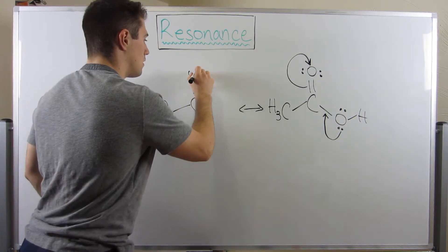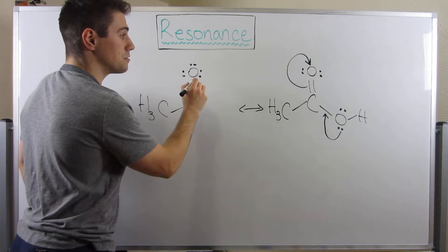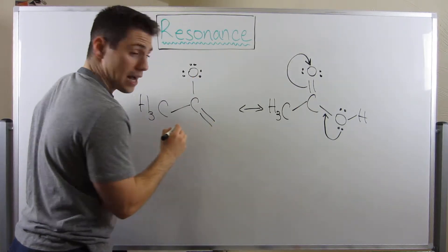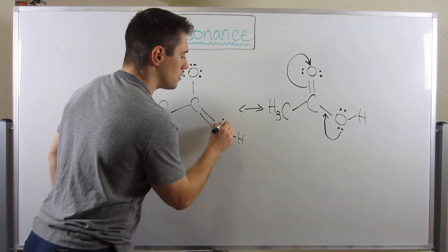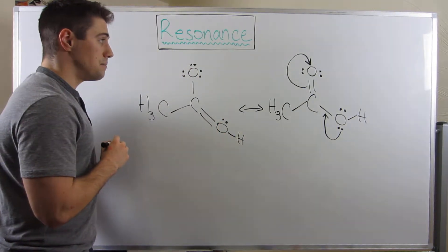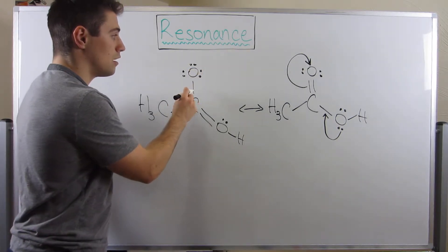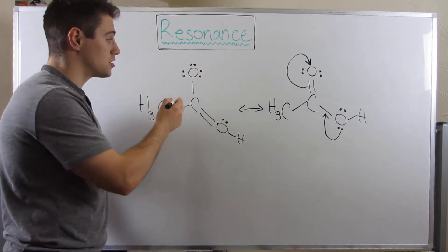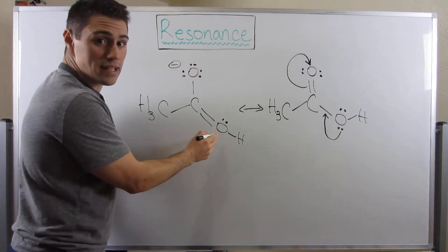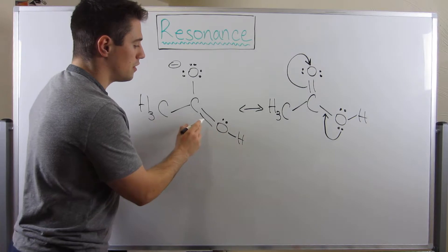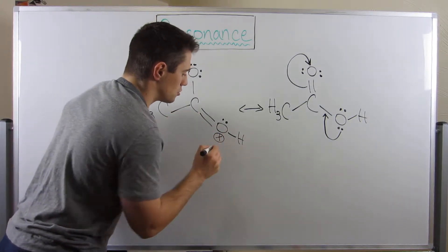So now this oxygen has three lone pairs, we have a double bond down here, and this oxygen now has just one lone pair. If you were thinking ahead about formal charges — counting one through seven for this oxygen, six valence electrons, so six minus seven gives a minus charge. And for the oxygen down here, one through five, six minus five, that is a plus one charge.